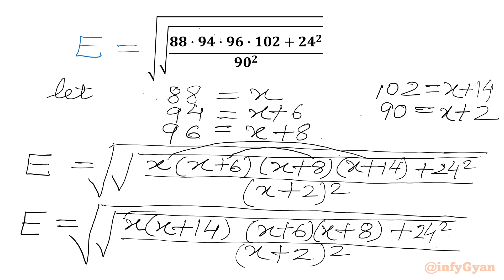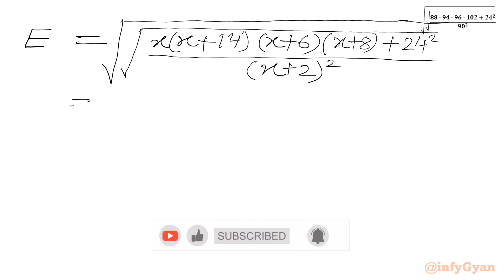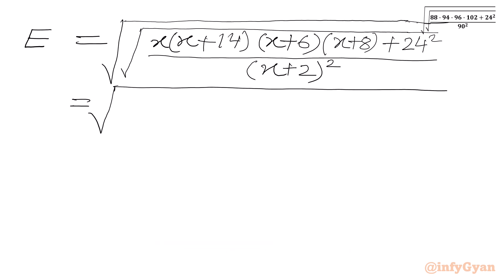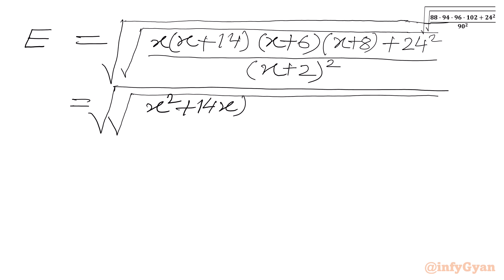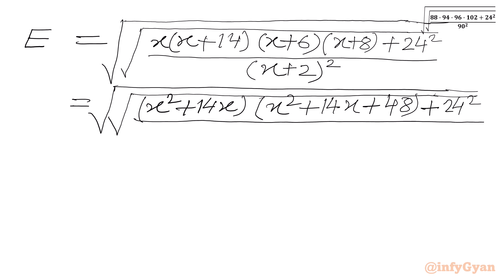Now we have to multiply these two parentheses. We get expression e equal to square root of square root of: x times x is x squared, x times 14 is 14x. Then x times x is x squared, 8x plus 6x is 14x, and 6 times 8 is 48. Plus 24 squared, over x plus 2 whole square.